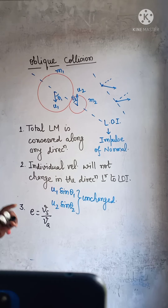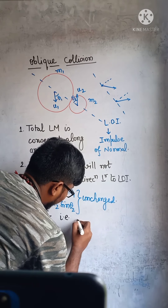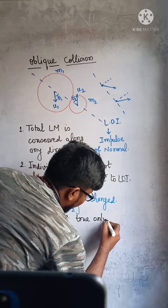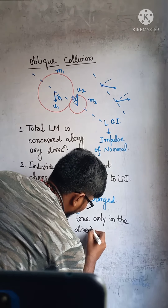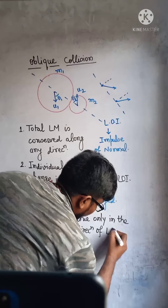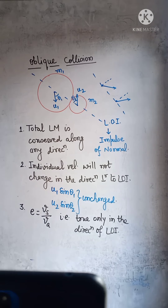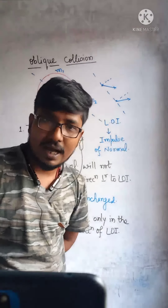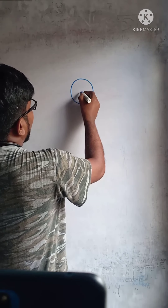The formula — coefficient of restitution equals velocity of separation divided by velocity of approach — is true only in the direction of the line of impact. That is, along the line of impact, we can apply the coefficient of restitution formula.